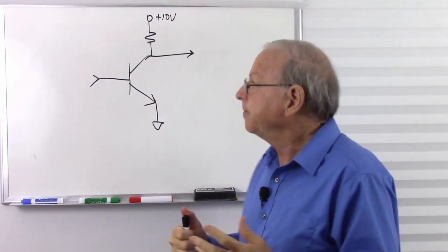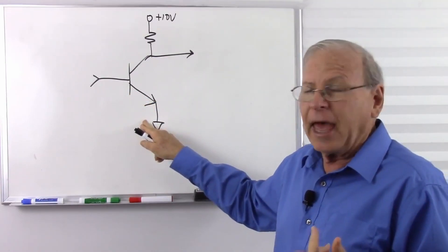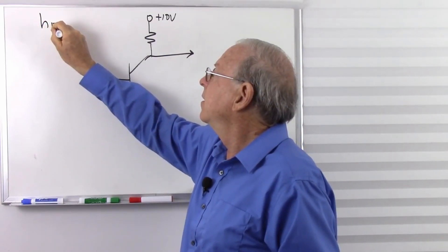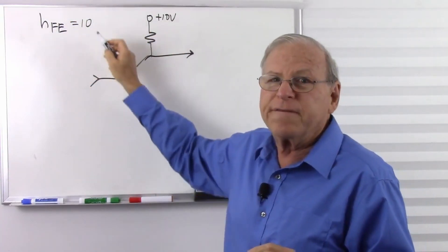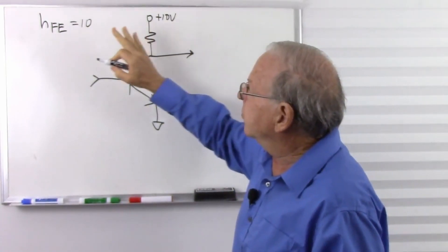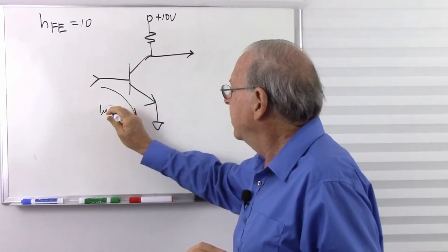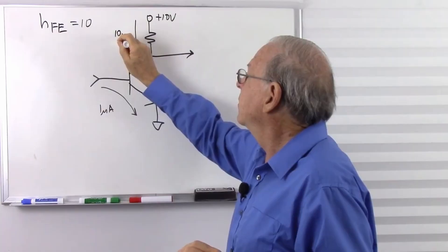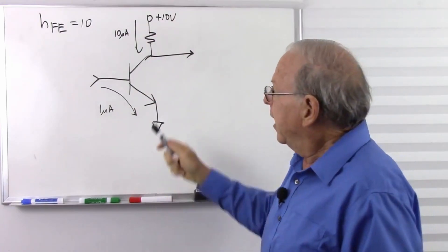The reason we say that a bipolar junction transistor is current controlled, or people say it amplifies current, is because there's a very convenient relationship between the current that flows from the base to the emitter and the current that flows from the collector to emitter. That is called the HFE. Let's say this one has an HFE factor of 10. This is actually quite variable depending on how much current is flowing and what the bias voltages are, but all things being equal, under the right conditions, if I put a microamp of current into the base, I'm going to get 10 microamps into the collector. So the HFE is the ratio of base current to collector current, and it's a very convenient ratio.